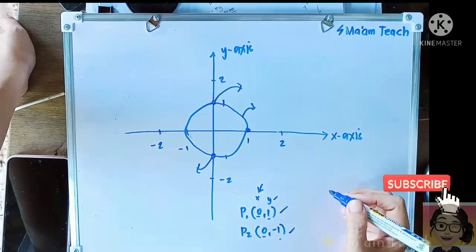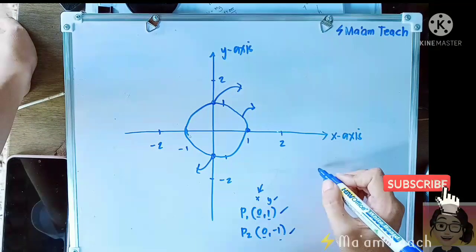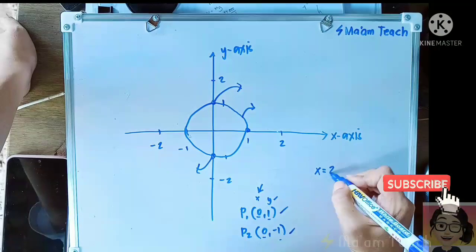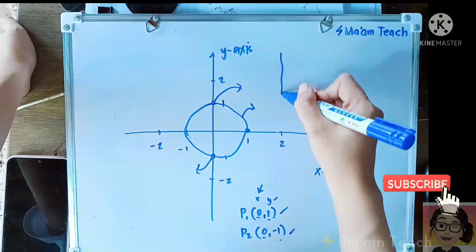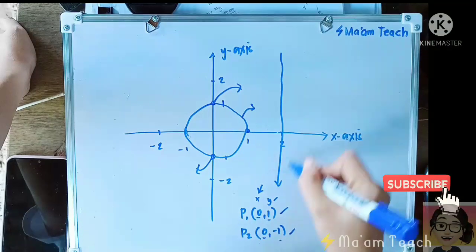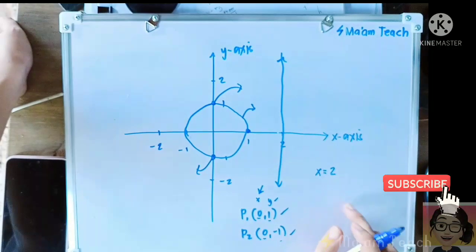Also class, if for example our equation is like this: x equals 2. If you graph that, it will be like this. So what can you observe from here?